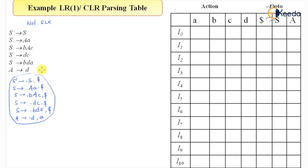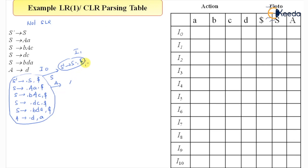This is i0. Now we'll move the dot, shift it and create new states with closure. On input S, this will be S-derived S dot followed by dollar — this is state i1. On input capital A, this will become S-derived A dot A followed by dollar, and I'll call it i2.